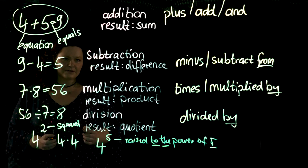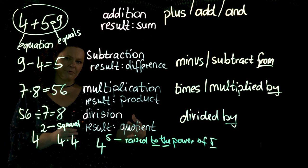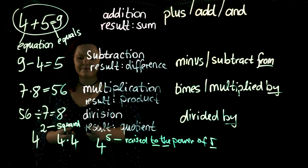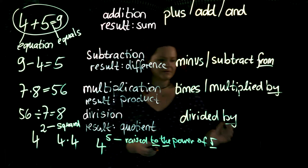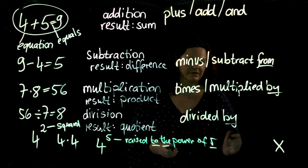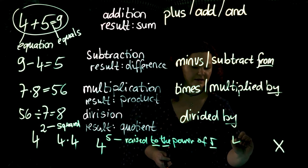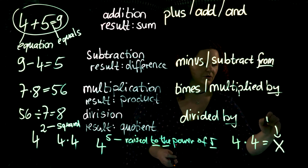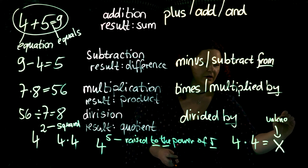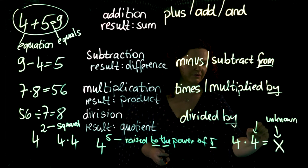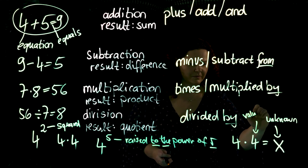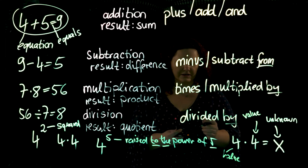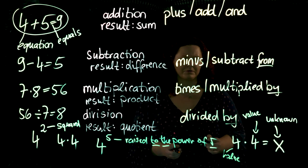There is one last term before you practice the whole thing in the context of other videos that explain more complex mathematics. This is the word or letter x. For example, I can say four times four is x. This is called the unknown. Unknown is short for unknown value. We have a value here and a value here. In that case, both numbers have the same value, and here we have an unknown value.